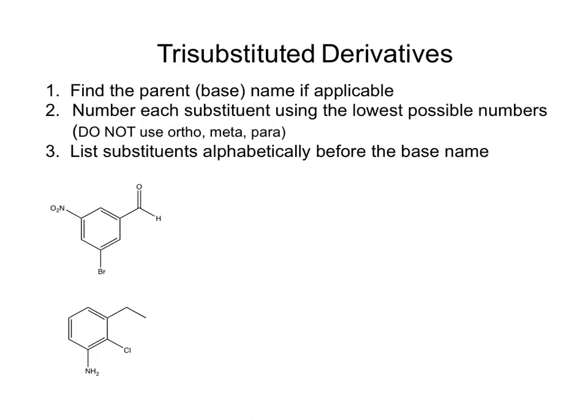Going on to trisubstituted derivatives. You can't use ortho, meta, and para now, because you have two different groups and it would be difficult to say what's ortho or para to what — one might be para to something but meta to something else, which gets very confusing. So you're going to first find your parent base name, then number around the ring so that the substituents get the lowest possible numbers, taking the parent substituent position as number one.